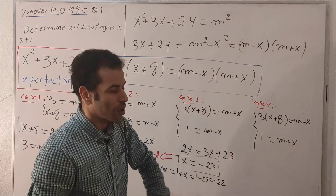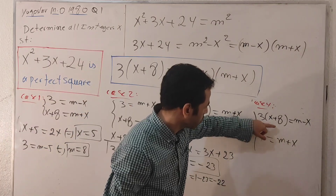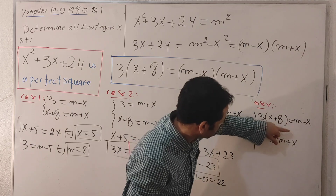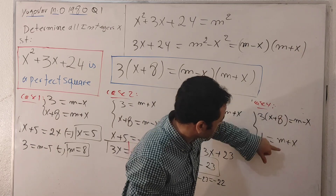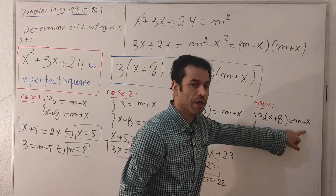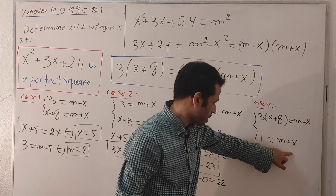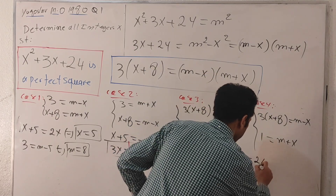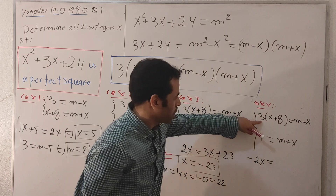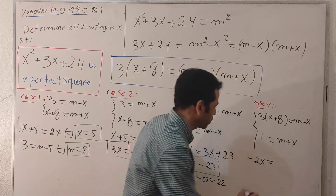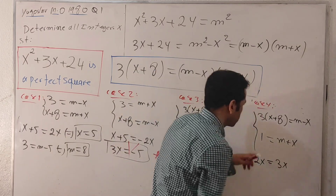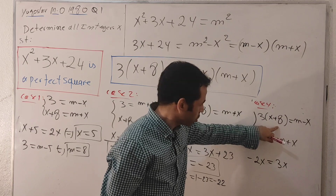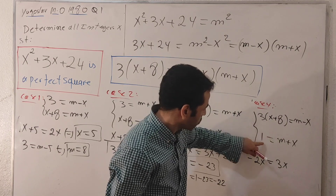Moving to the last case, case four. Doing one equation minus the other, m is eliminated. I get minus x minus x, which is minus 2x. On the other side, 3 times 8 is 24, and 24 minus 1 gives 23.